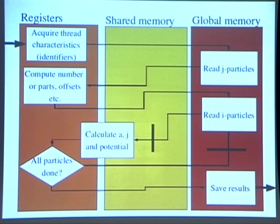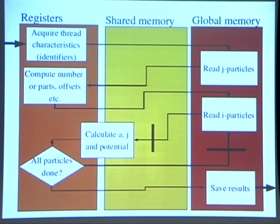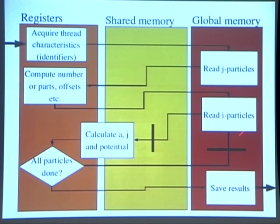The way we try to program the n-body part on the GPU: first you acquire a bunch of memory onto the GPU at the register level, go through the shared memory, go to the global memory where you do the parallelization of your particles. That communicates back to computing the forces and offsets, then you read the i-particles and calculate the acceleration, jerk, and potential until all particles are done. These are the synchronization boundaries inside the graphics card.